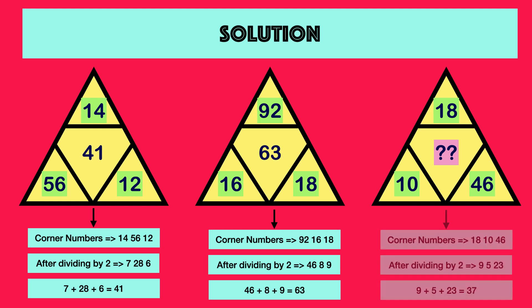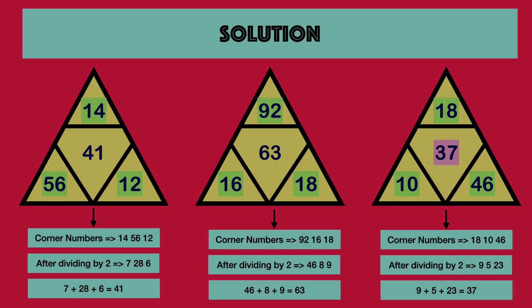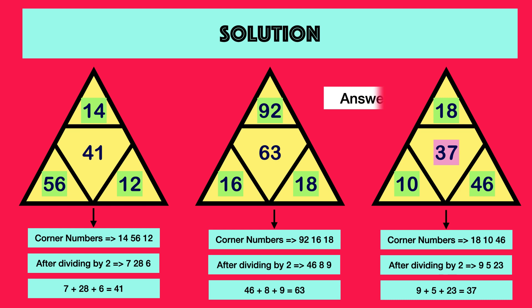Finally, in the third triangle, corner numbers are 18, 10, 46. After dividing each number by 2, resulting numbers are 9, 5, 23. Further adding all numbers, result is 37, which is the number represented in center of third triangle. Thus answer to this particular problem is 37.